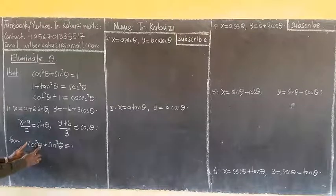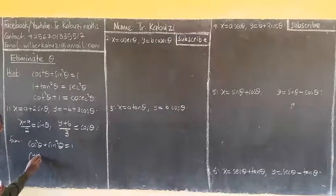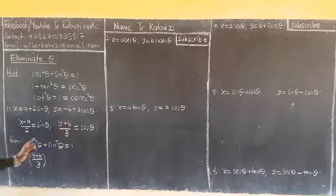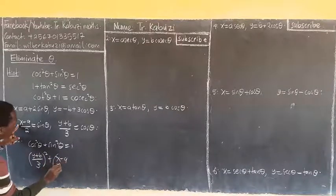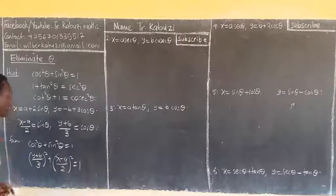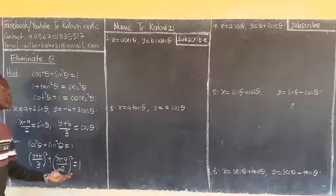You find that cos is here, which is (y plus d) over 3, squared, plus sin is here, (x minus a) over 2, the whole squared, equaling 1. And remember, you see there is no theta anymore — theta has been eliminated.